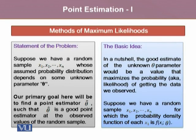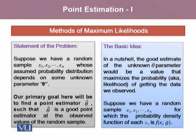Suppose we have a random sample of size n with values x1, x2, up to xn, whose assumed probability distribution depends on some unknown parameter theta. Our primary goal is to find the point estimator theta-cap such that theta-cap is a good point estimator at the observed values of the random sample. The basic idea of the maximum likelihood method is that a good estimate of the unknown parameter theta would be a value that maximizes the probability — also known as likelihood — of getting the data we observe.